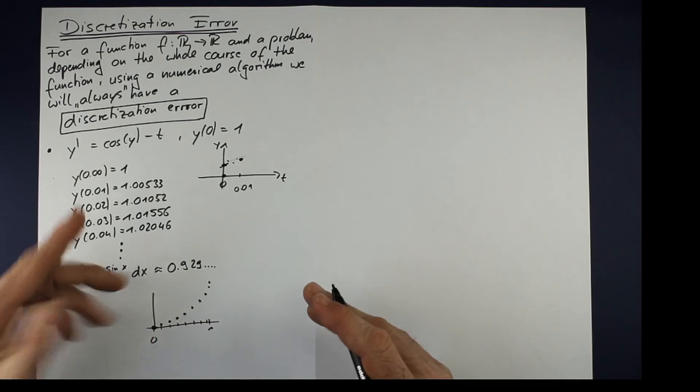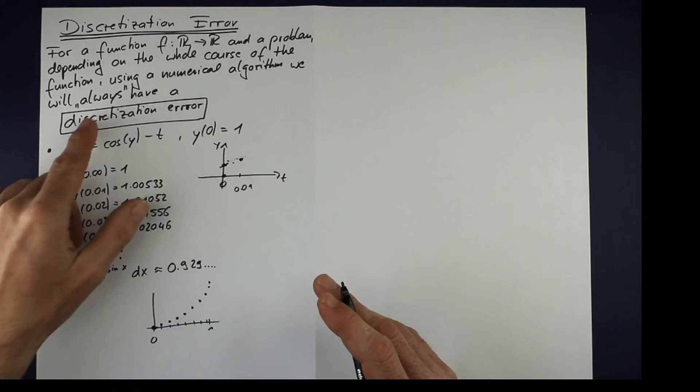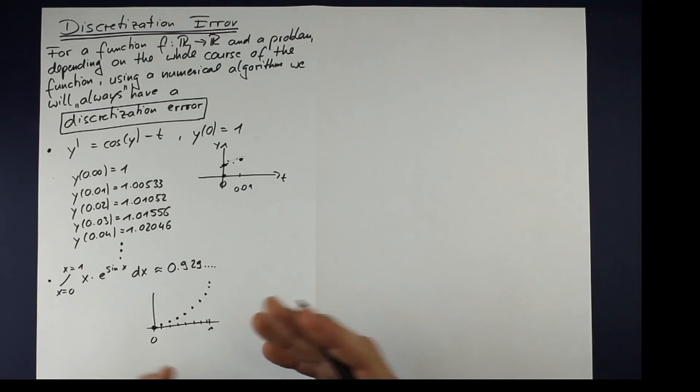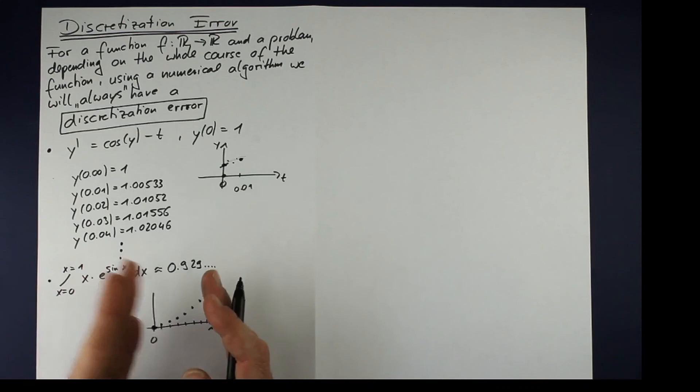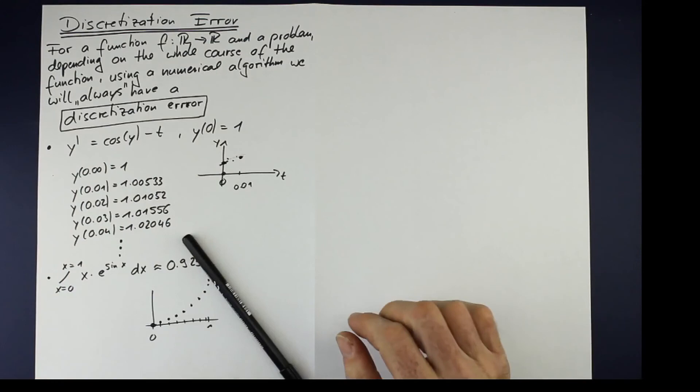Maybe there is a very little chance that the solution we calculate is completely correct, but almost always there will be an error. And this comes from the fact that we can't evaluate here on the whole interval, but only on some discrete points. And that's the reason for the discretization error.